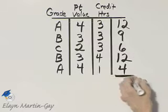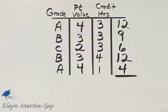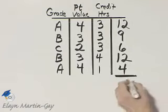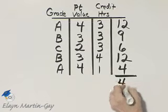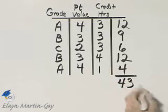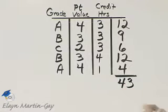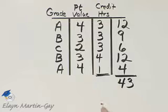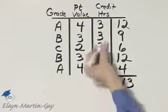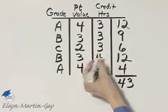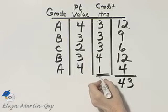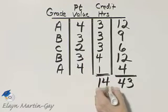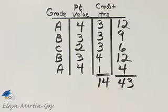Then find the sum of this product column. If you do, you'll find it has a sum of 43. Also find the sum of your credit hours — that is 14 credit hours.